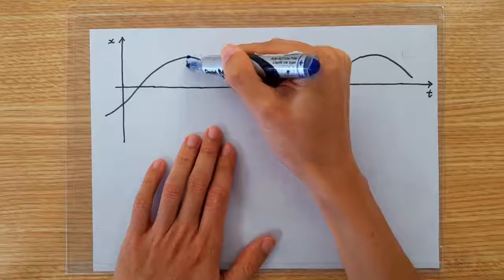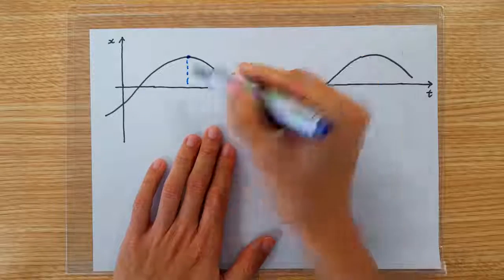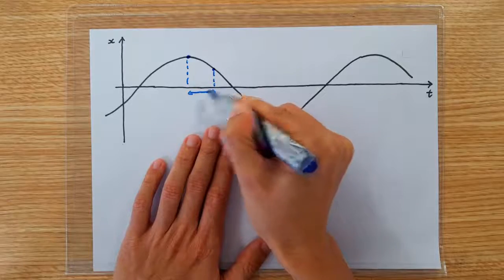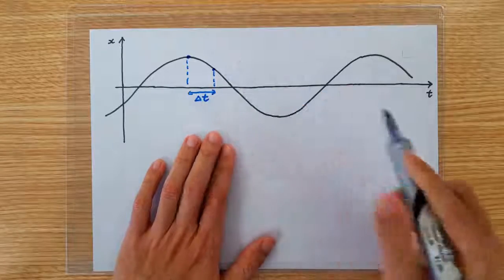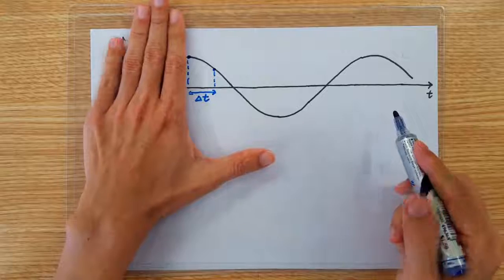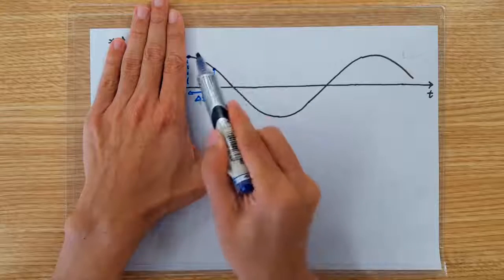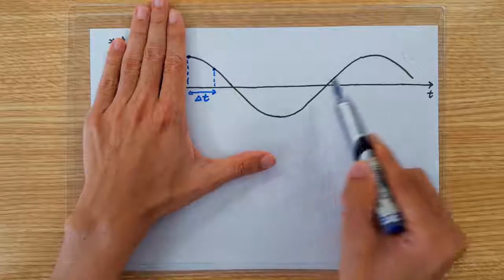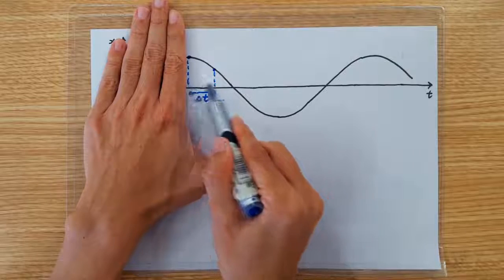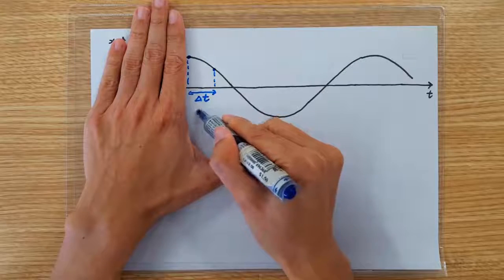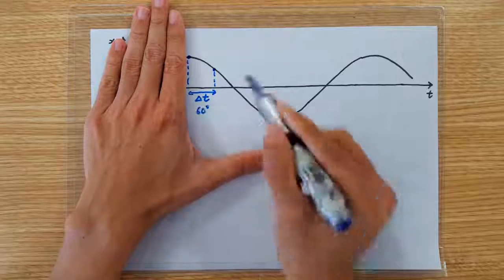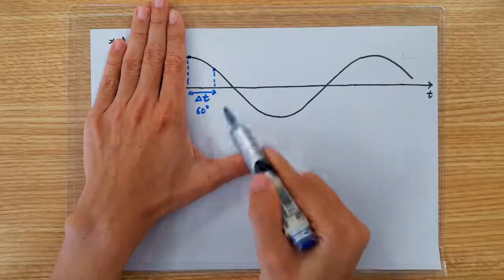So we are interested in this amount of time. If we set t equals to zero here, then what we see is a cosine graph. So clearly this corresponds to 60 degrees, because cosine 60 degrees gives me half.